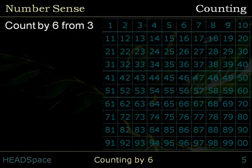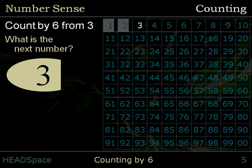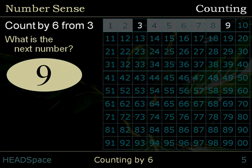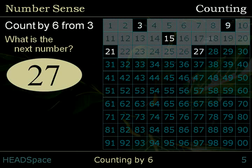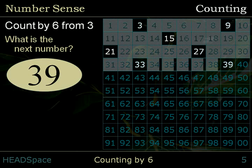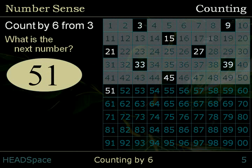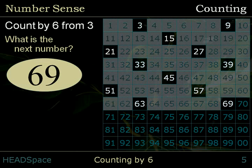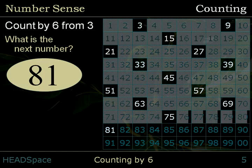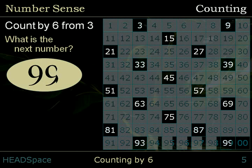Count by 6 from 3. What is the next number? 3, 9, 15, 21, 27, 33, 39, 45, 51, 57, 63, 69, 75, 81, 87, 93, 99.